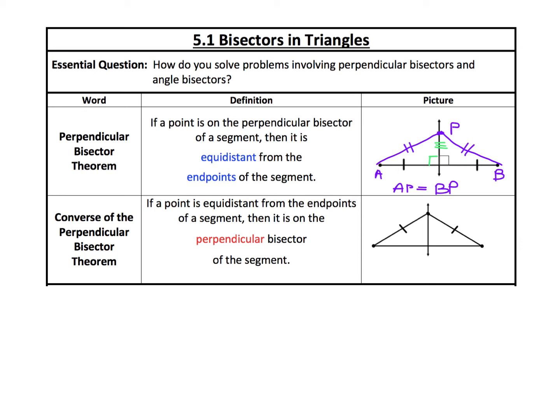The converse of the perpendicular bisector theorem is the opposite: if a point is equidistant from the endpoints of a segment, then it is on the perpendicular bisector of the segment. So if a point is equidistant from the endpoints, we can conclude that the segment is a perpendicular bisector — meaning the two halves are equal (bisector part) and the two angles are both 90 degrees (perpendicular part). In summary: knowing a point is on the perpendicular bisector means it's equidistant from the endpoints, and vice versa.